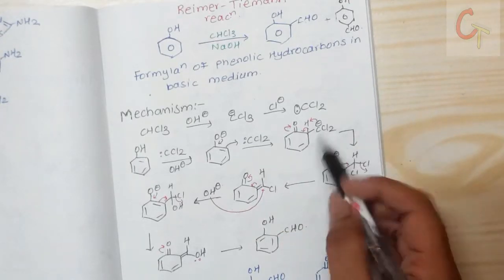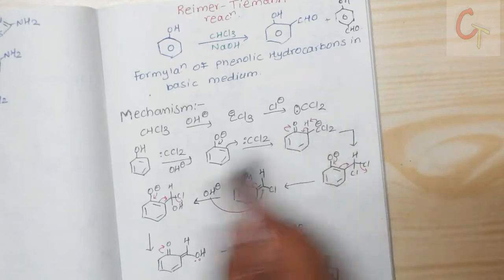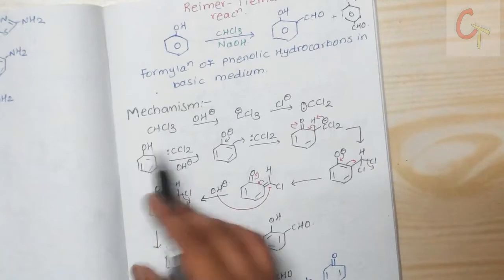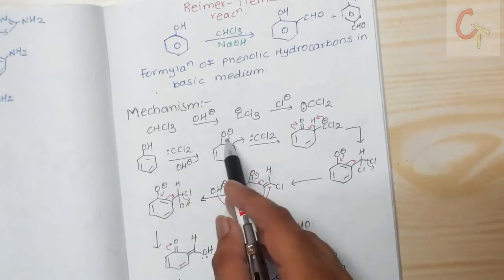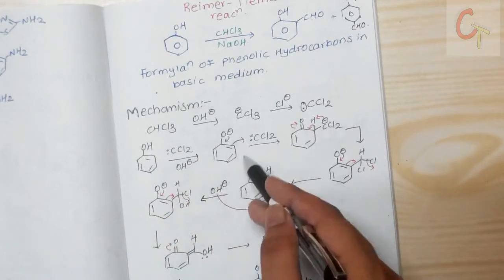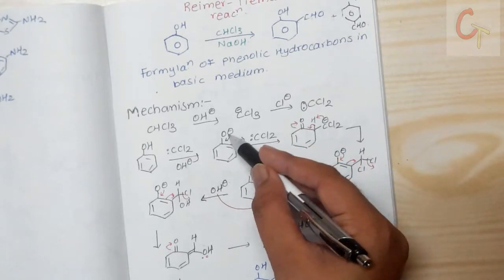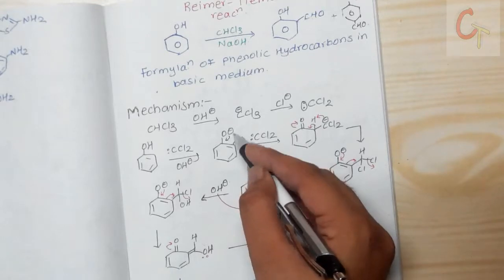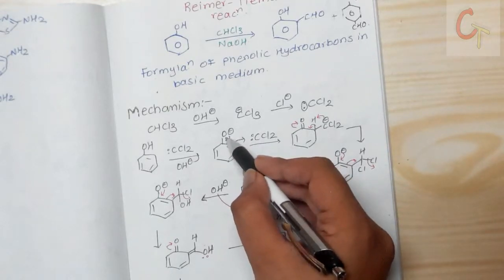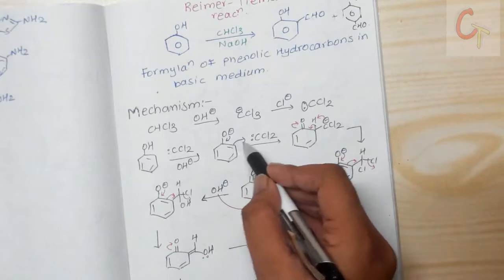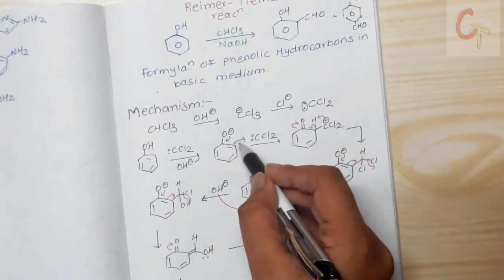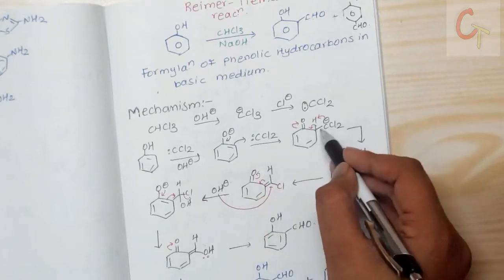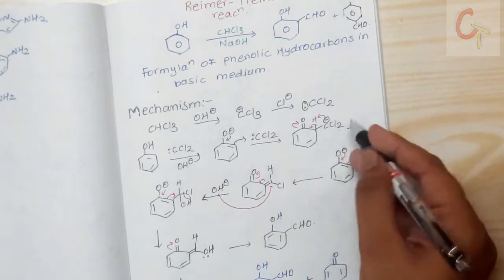Next, phenol reacts with the base, which abstracts the phenolic proton to give phenoxide. The negative charge on oxygen migrates through the ring via the double bond, creating a nucleophilic carbon center. This nucleophilic carbon then attacks the electrophilic carbene carbon (:CCl₂), giving an intermediate where the carbon still carries a negative charge.